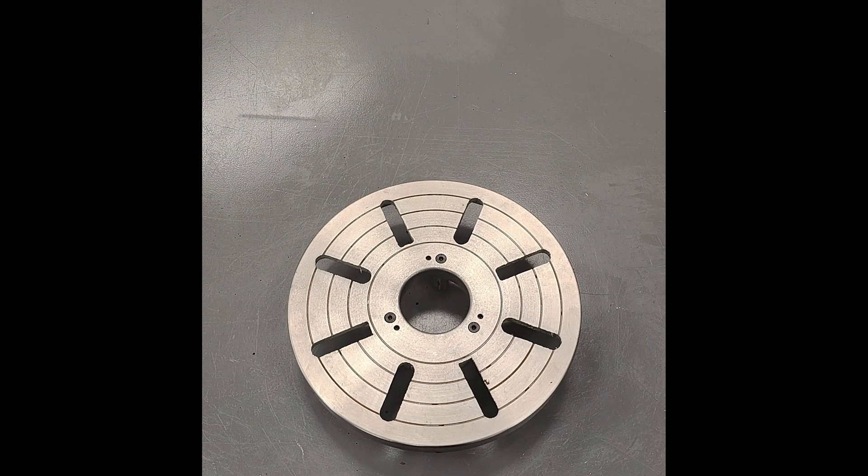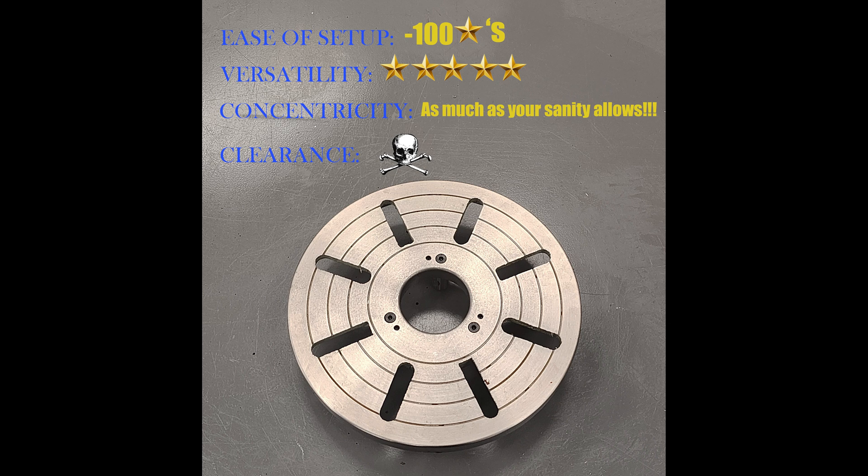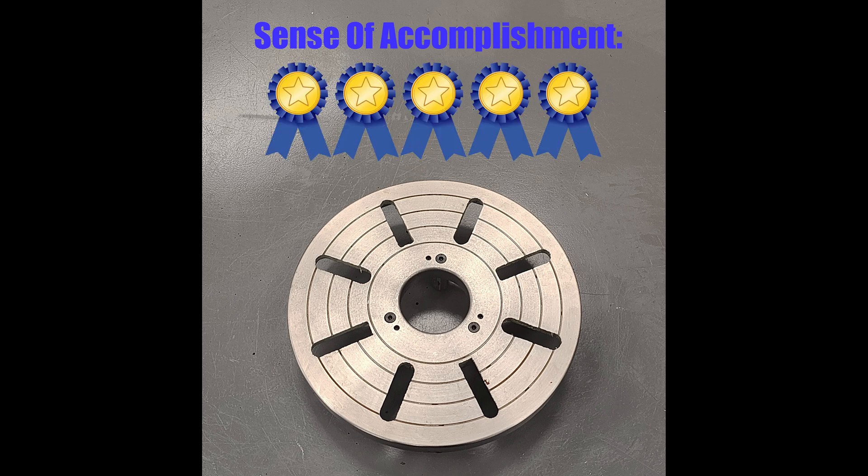So on the faceplate, for ease of setup, I'm giving it negative 100 stars. Versatility, however, is 5 stars since it'll hold anything you can fit within the throw of your lathe and safely clamp in place. Concentricity? How much do you like tapping parts back and forth? I'm giving this a score of as much as your sanity allows. And finally, most setups will have some sort of spinning clamps of death associated with them, so for clearance, I'm giving it a skull and crossbones instead of a star rating. That seems kind of dire, but some of the most satisfying jobs I've done on the lathe have involved some sketchy setup on the faceplate, so I'm going to add an additional sense of accomplishment category and give the faceplate 5 stars.